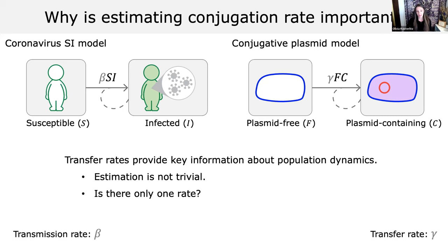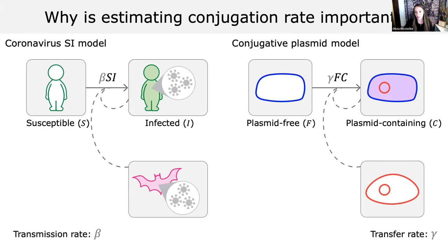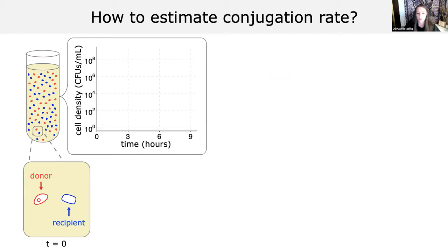Transfer rates are not trivial to estimate, partly because there isn't just one transfer rate. You can't say this plasmid has this transfer rate, because they're very dependent on the environment and the cells around them. Across microbial communities, species are in close contact with one another all the time. The transfer rate between the blue species is probably quite different than when a plasmid is transferring between the red and blue species.